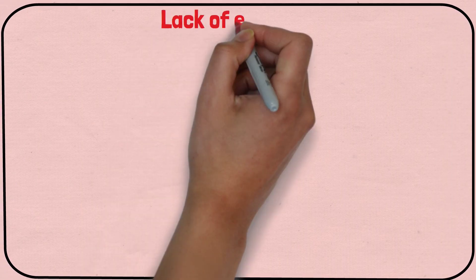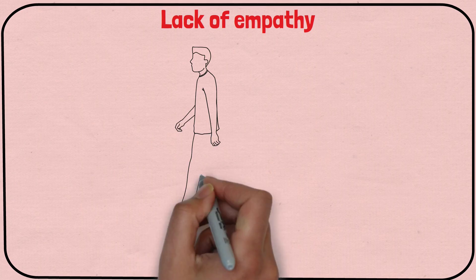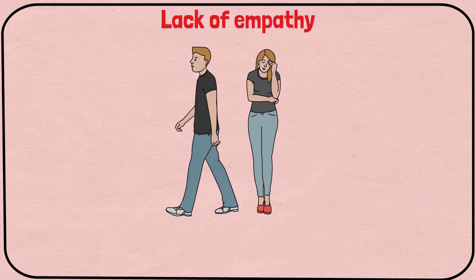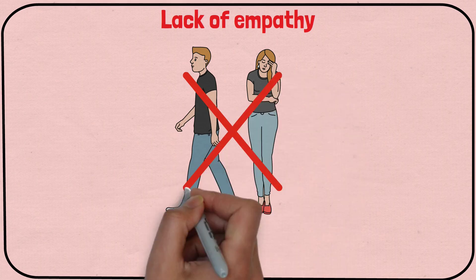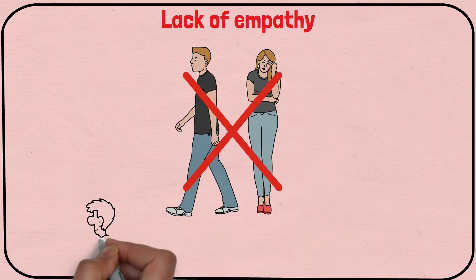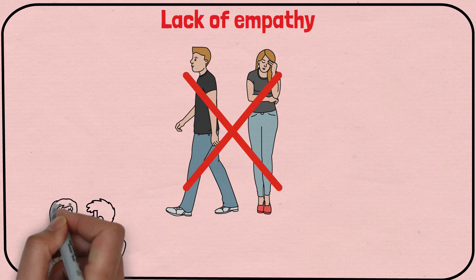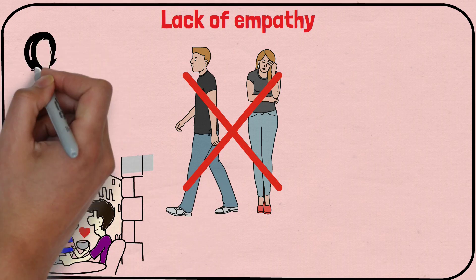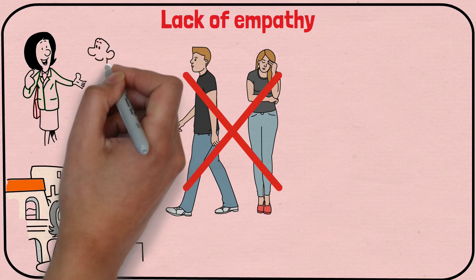Emotional abuse often involves a lack of empathy from the abuser. They might not care about your feelings, or end up making you feel like your feelings are invalid. This is not how a healthy, loving relationship should be. Empathy is being able to understand and share the feelings of the other person. It's putting ourselves in someone else's shoes, and feeling what they're feeling.